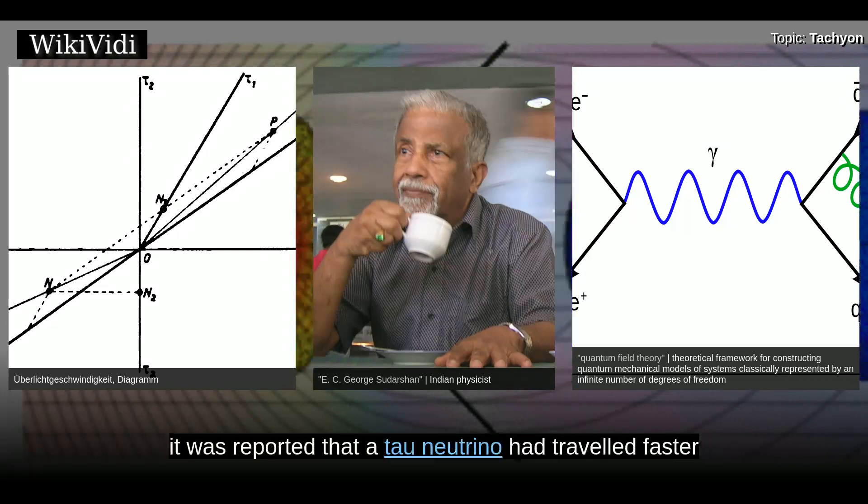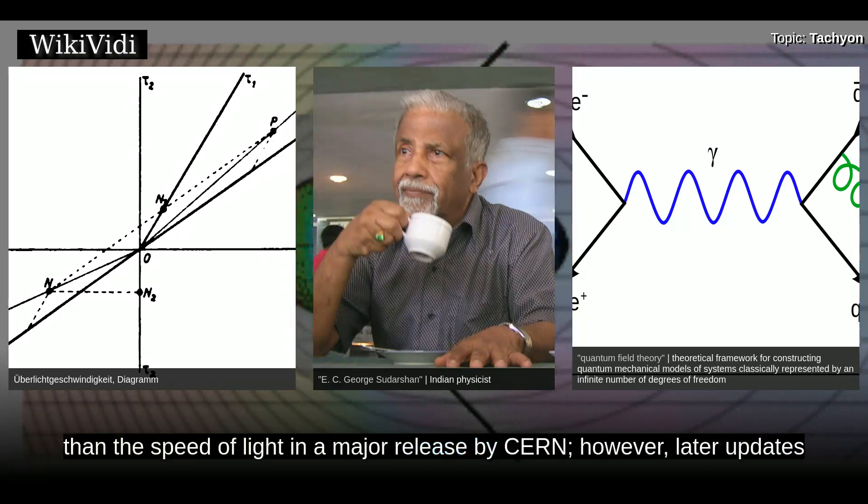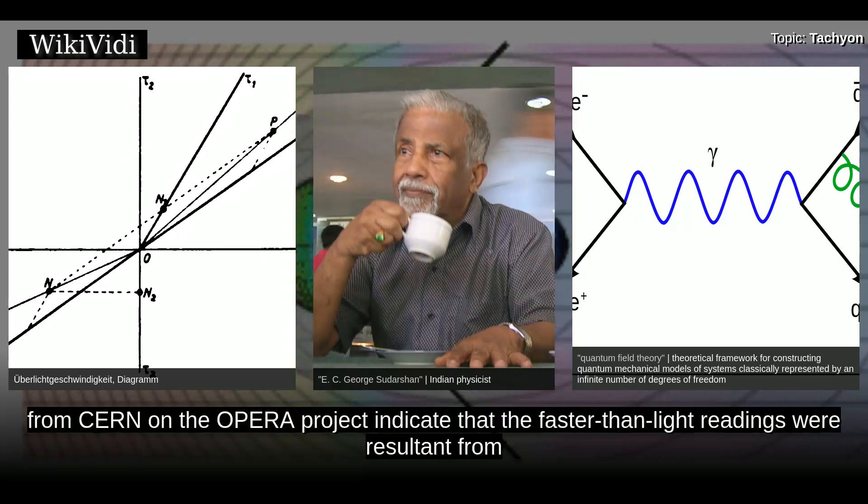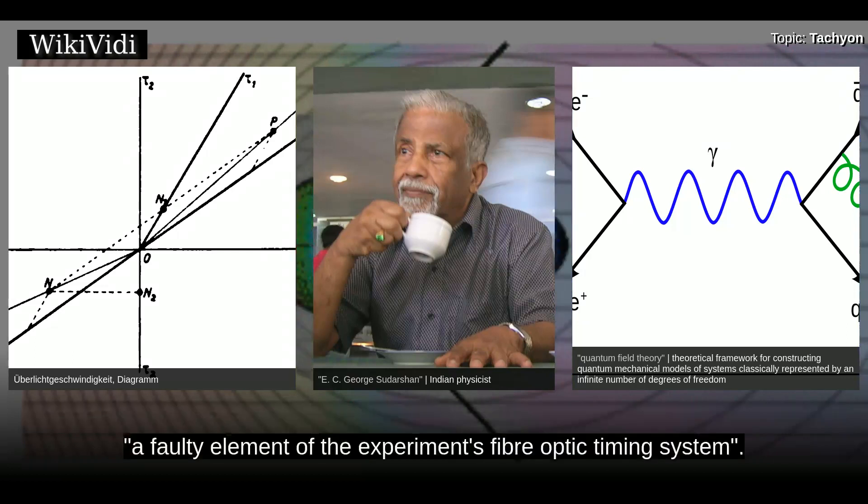In September 2011, it was reported that a tau neutrino had traveled faster than the speed of light in a major release by CERN. However, later updates from CERN on the OPERA project indicate that the faster-than-light readings were a result of a faulty element of the experiment's fiber-optic timing system.